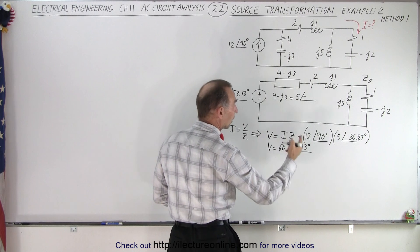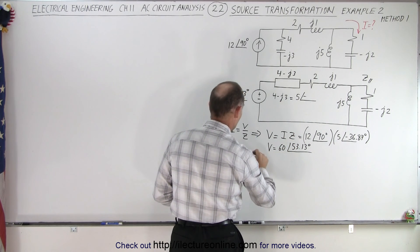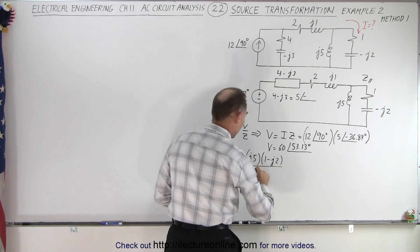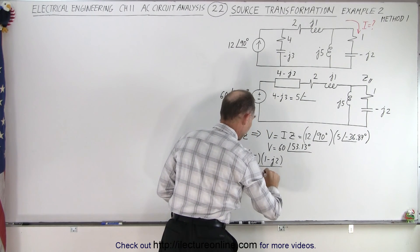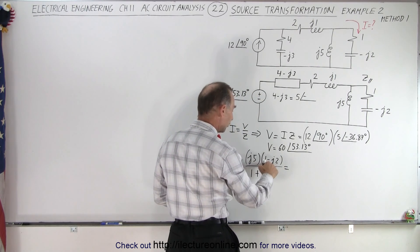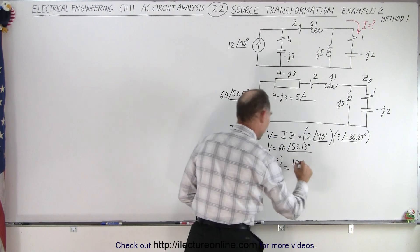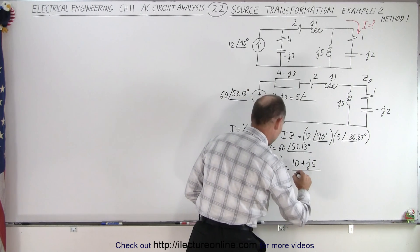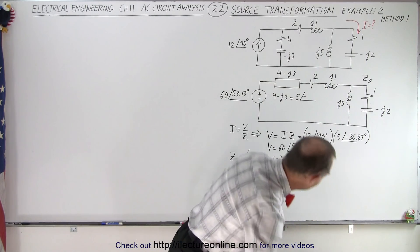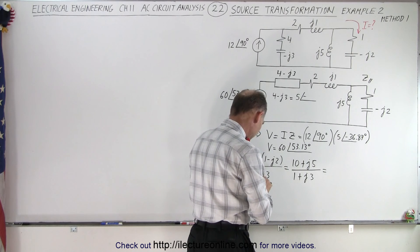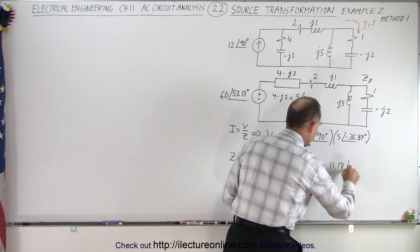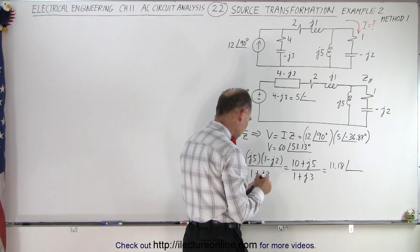Z parallel is equal to the product over the sum. The product would be J5 multiplied times 1 minus J2, divided by the sum, which is 1 plus J3. When I multiply: J times J is negative 1, times negative is positive 1, so that gives me 10 plus J5 in the numerator, divided by 1 plus J3 in the denominator. Now we can convert that to magnitude and phase angle format. The numerator magnitude is the square root of 125, which is 11.18, with a phase angle of inverse tangent of 0.5, which is 26.565 degrees.